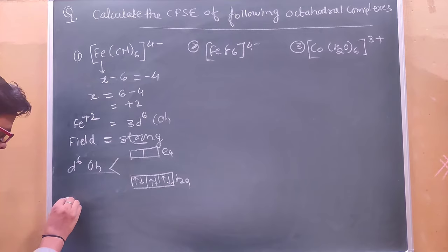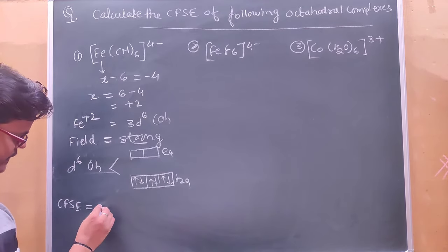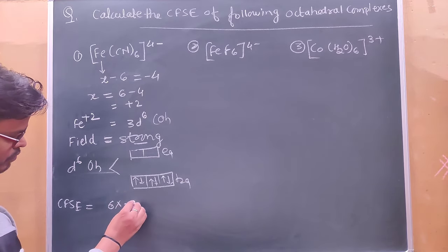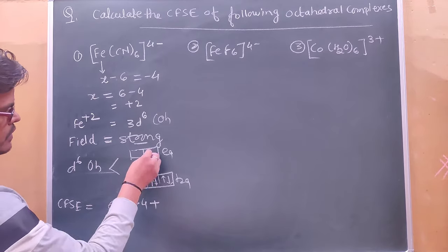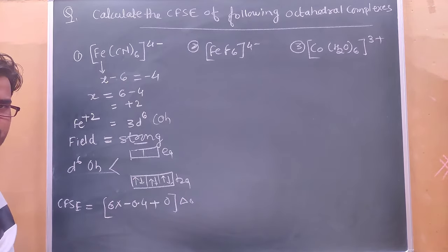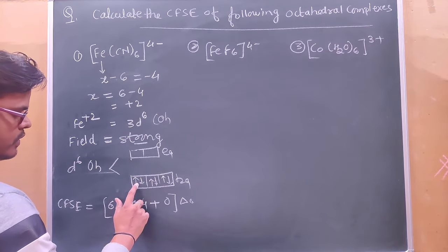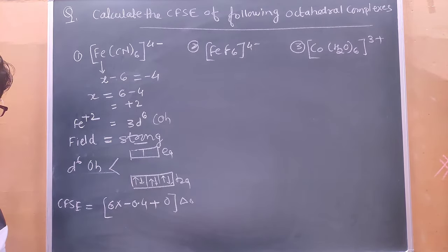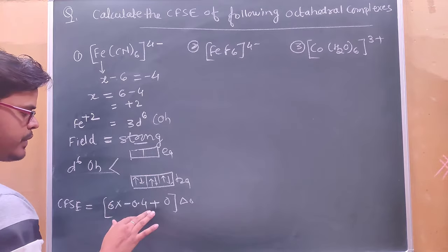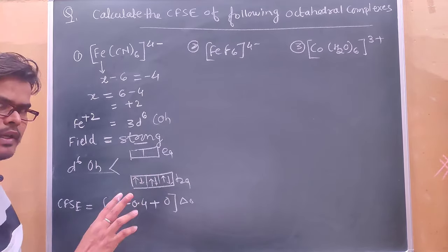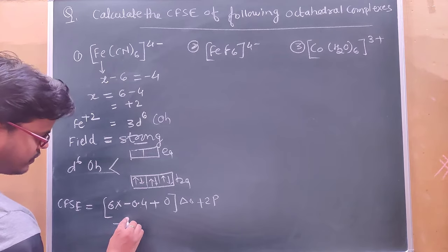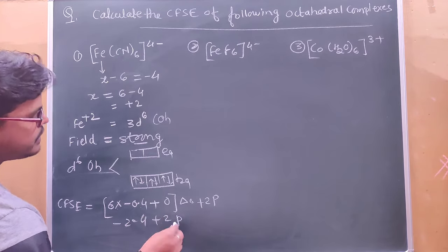CFAC calculate करना है: CFAC = 6 × (-0.4) + 0 × (0.6), bracket के बाहर ΔO। Strong field में pairing energy की ज़रूरत पड़ती है। Pairing नहीं होता तो 1 pair बनता, pairing हो गया तो 3 pairs बने। Extra pairs = 2, इसलिए 2 pairing energy जोड़ेंगे। तो CFAC = -2.4ΔO + 2P।